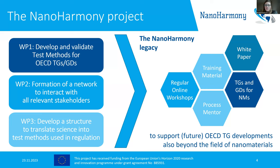One activity supporting the Malta Initiative was the Nanoharmony project. The Nanoharmony project worked in three work packages. The first was to develop and validate test methods for OECD test guidelines and guidance documents for nanomaterials. The second was to form a network to interact with all relevant stakeholders. In the third work package, we developed the structure to translate science into test methods used in regulation.